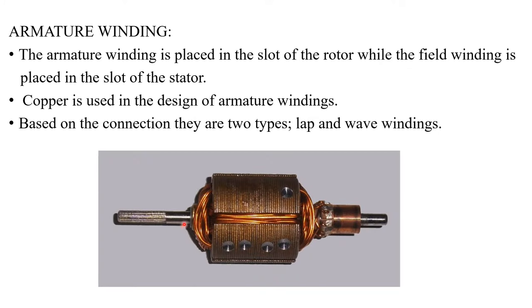Normally armature windings are placed in the slots of the rotor, but field windings are placed in the slots of the stator. The material used for armature winding is copper, and based on the connection, armature windings can be basically two types: lap windings and wave windings. In this diagram, you can see an armature winding.